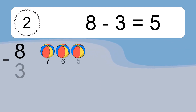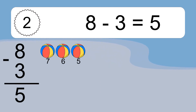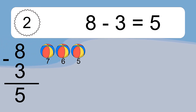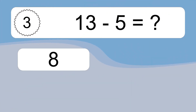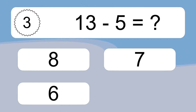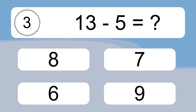8 minus 3 equals 5. Let's count it: 7, 6, 5. 13 minus 5 equals what?